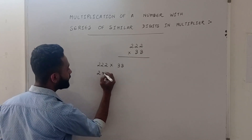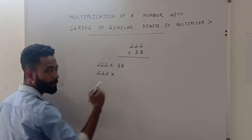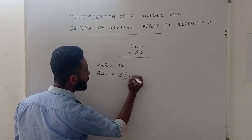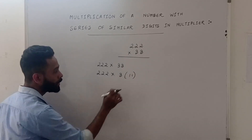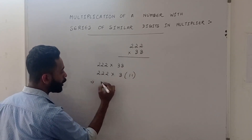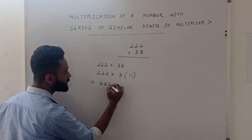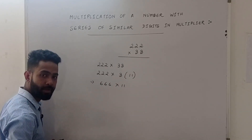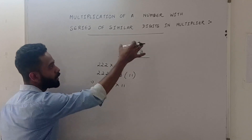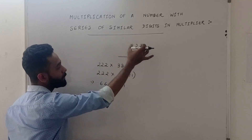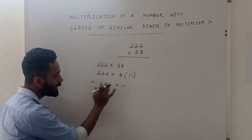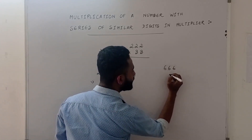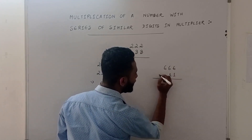So we have 3 as common. If I take 3 as common, 3 into 11 is 33. So if we multiply this, how much would that be? That would be 666. So how much would that be? 666 multiplied by 11. The number is 322 multiplied by 333. Equivalently, 366 multiplied by 11. Now we can use the earlier technique.